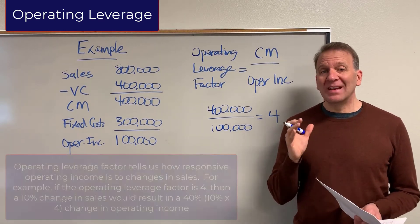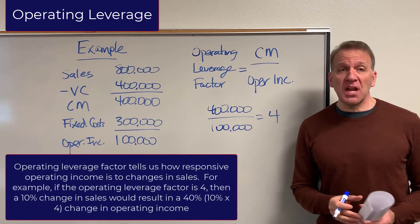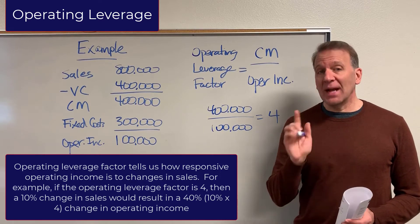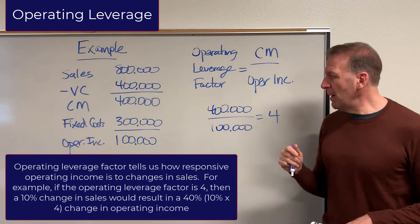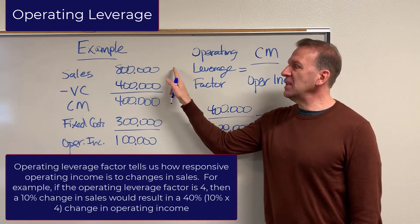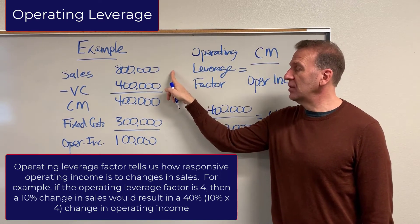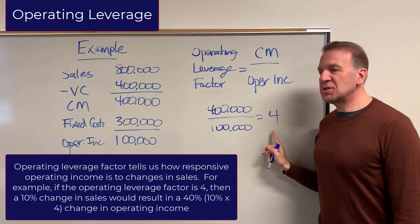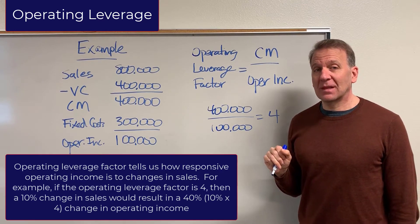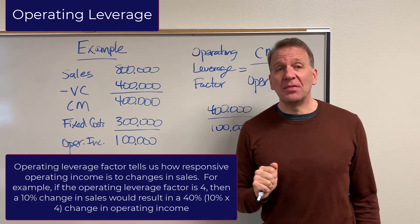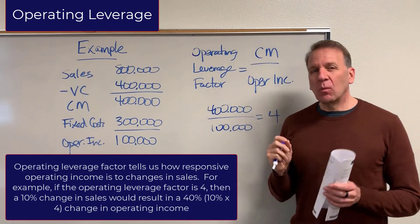Now let me explain what this number tells us. It's telling us how responsive our operating income is to changes in sales. Basically, for every percentage change we have — whether going up or down — whatever percentage change we have in sales, our operating income will change four times that amount, since our operating leverage factor is four. You're probably going to have to really think about this, but it makes perfect sense once you go through examples.